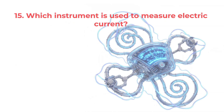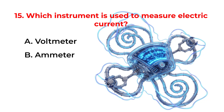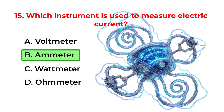Which instrument is used to measure electric current? A. Voltmeter. B. Ammeter. C. Wattmeter. D. Ohmmeter. Correct answer is option B. Ammeter.